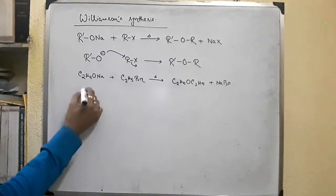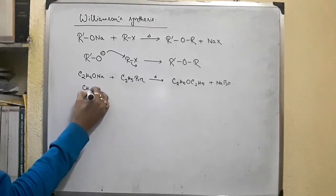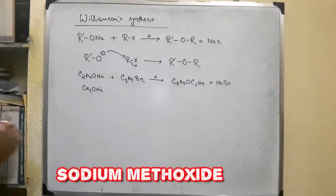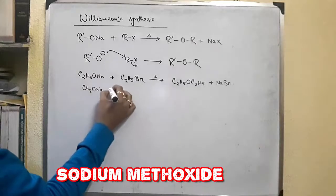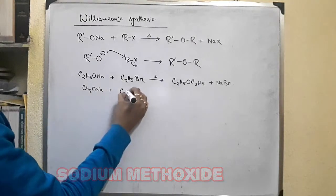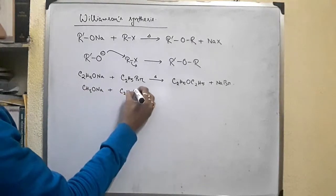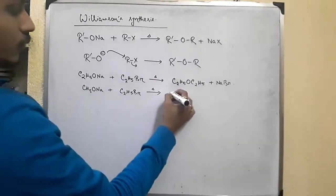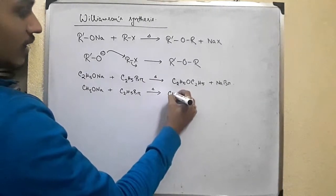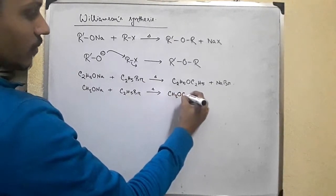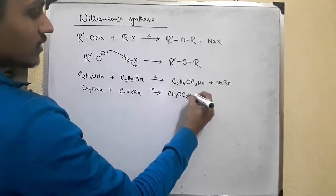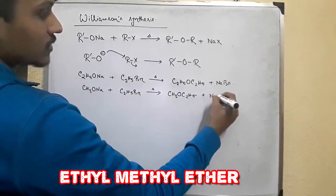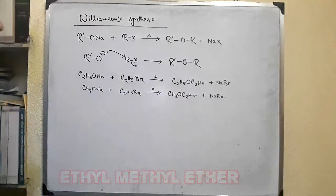Taking another example: CH3ONa — sodium methoxide — plus C2H5Br, ethyl bromide, with heat, we get an unsymmetrical ether that is ethyl methyl ether, plus sodium bromide as the byproduct.